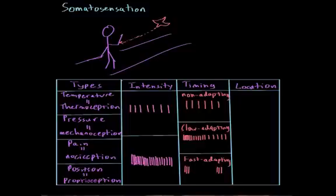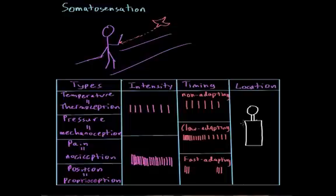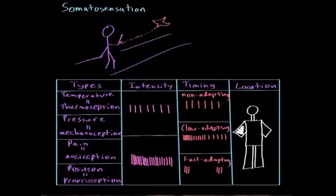The final piece of information we need is location. If the bird is coming in to peck him, he needs to know it's pecking his arm and not his leg. In order for the brain to do that, it relies on things called dermatomes. Each part of the body is innervated by a particular nerve, and that nerve goes up to the brain. So if a bird is pecking his arm, that arm sends a nerve signal to the brain and the brain is able to figure out that it's this arm that's being pecked.